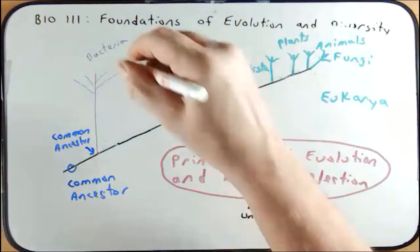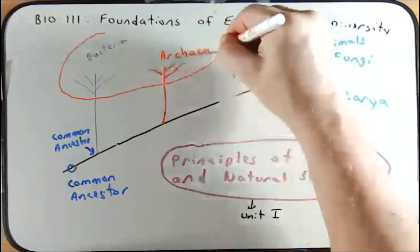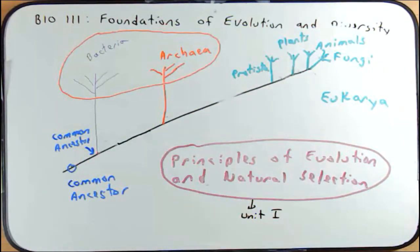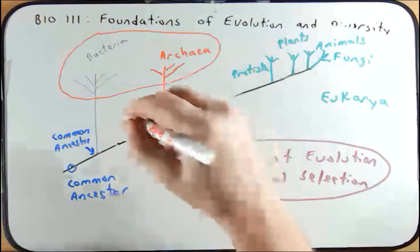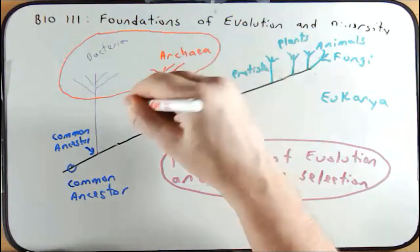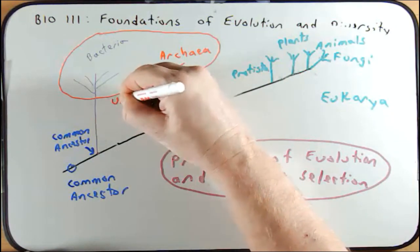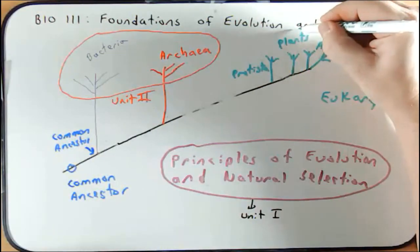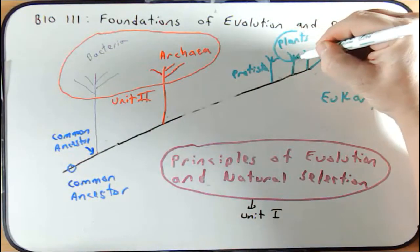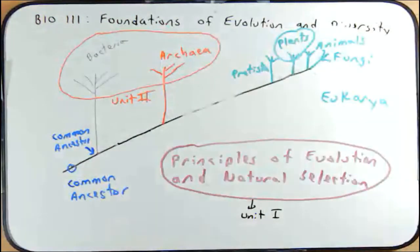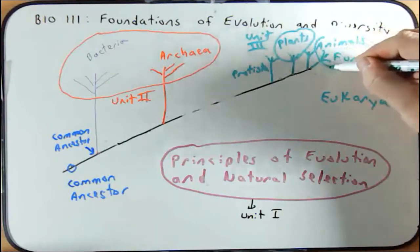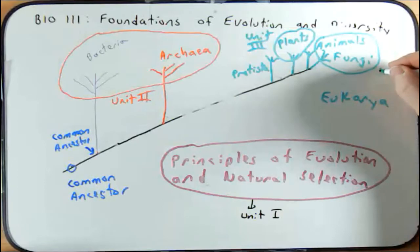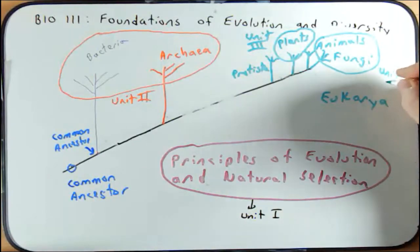Unit two of our course will be spent looking at the diversity and adaptations of bacteria and archaea, as well as some general principles of speciation. Unit three will be spent with plants. And then unit four will be spent with animals and fungi.